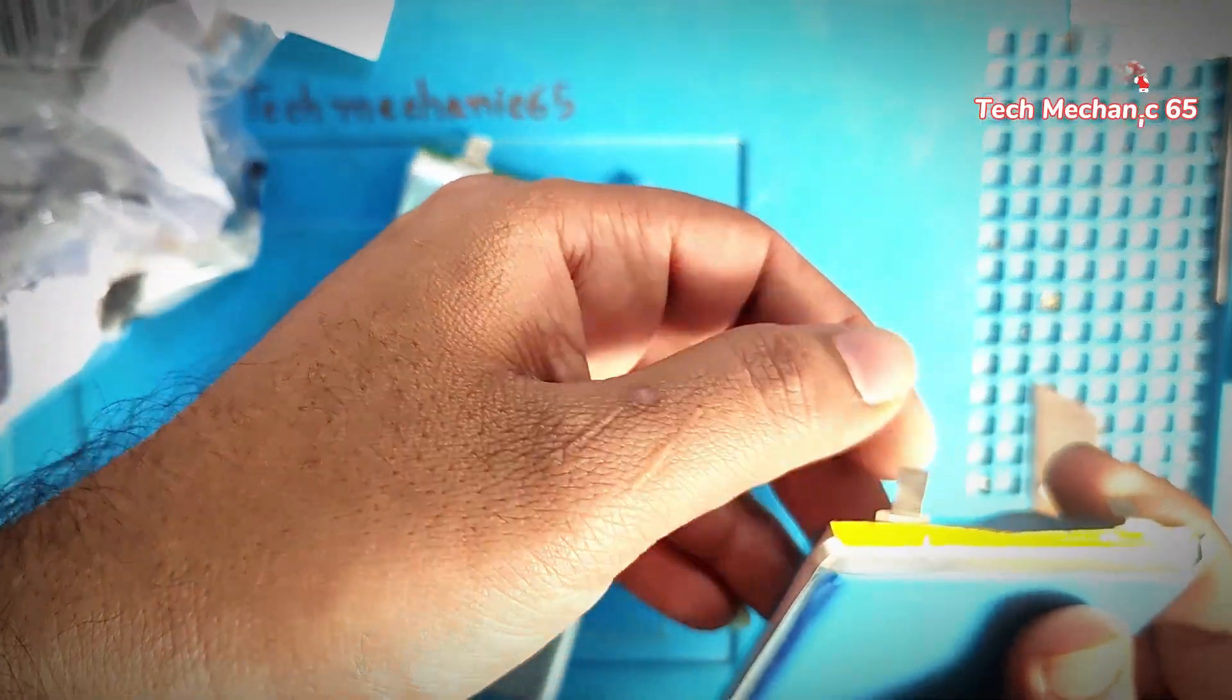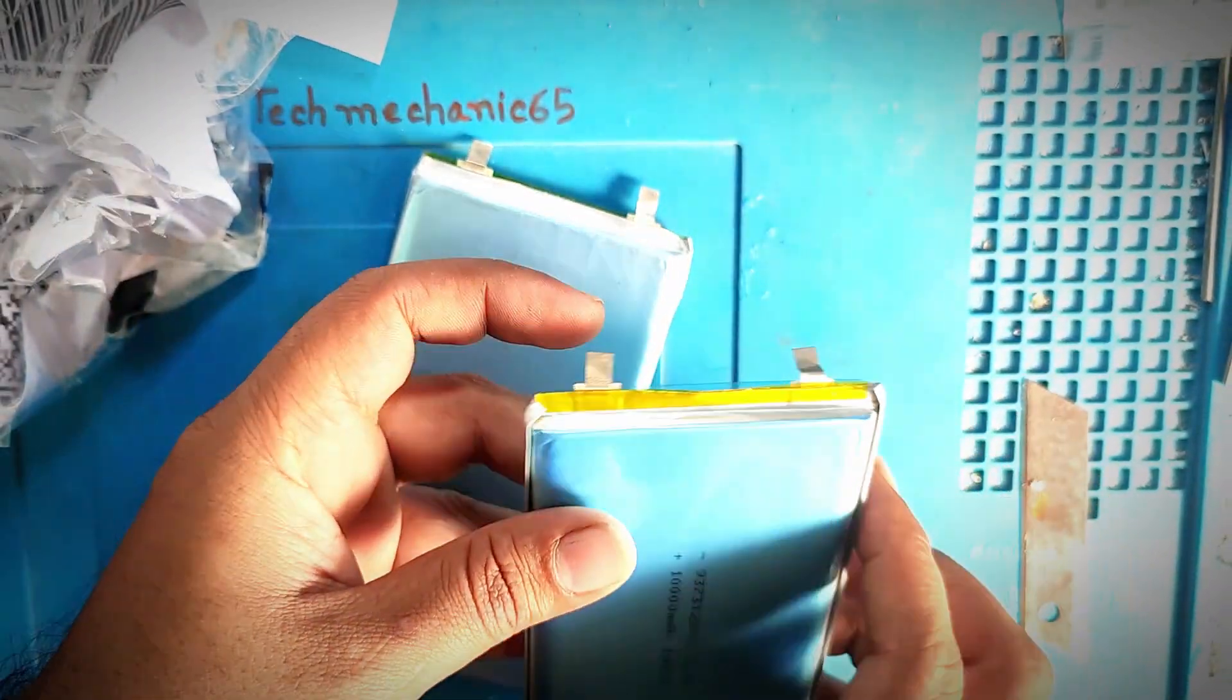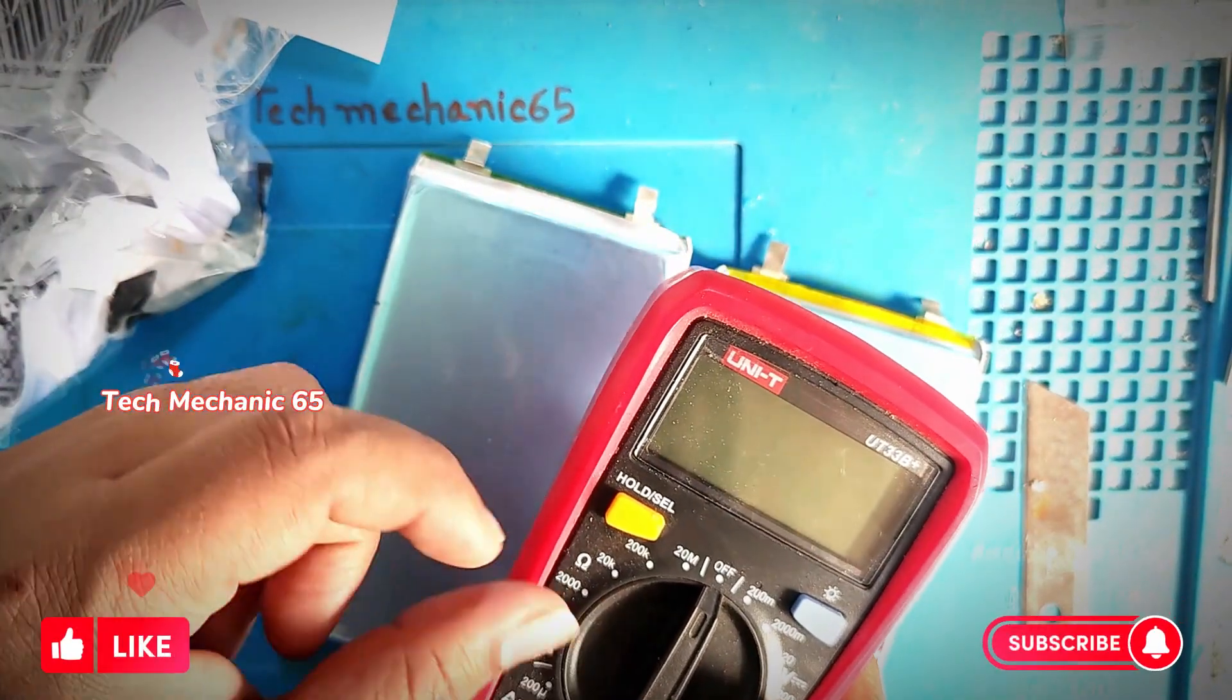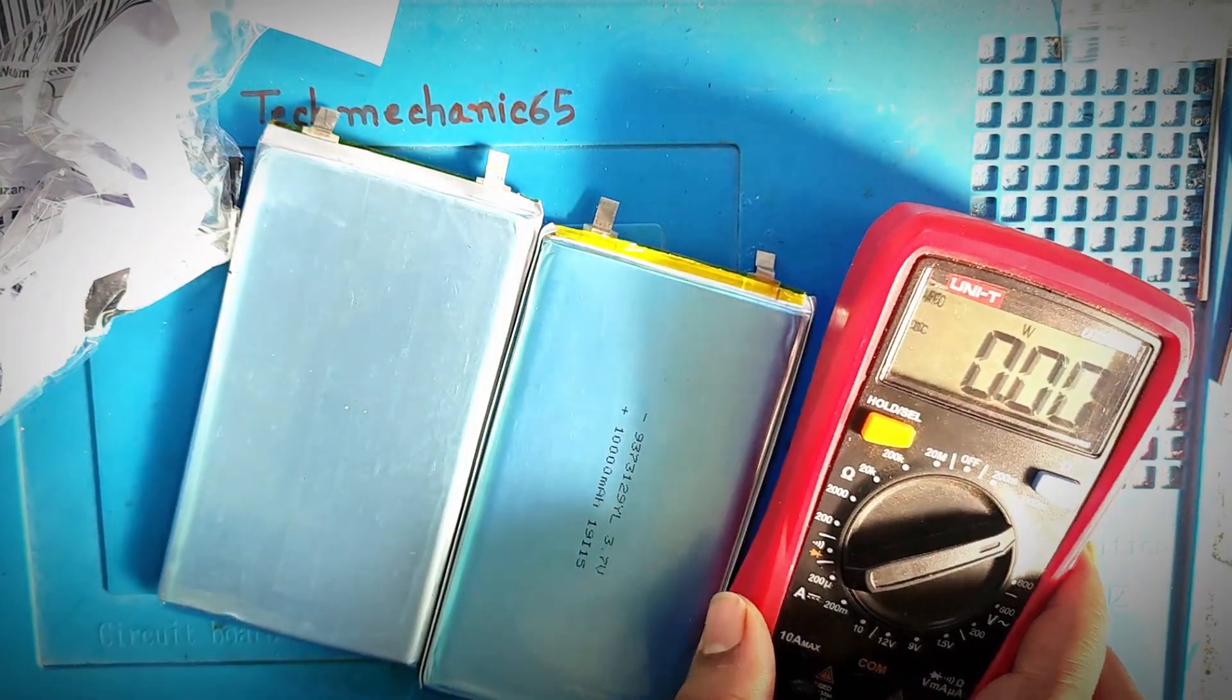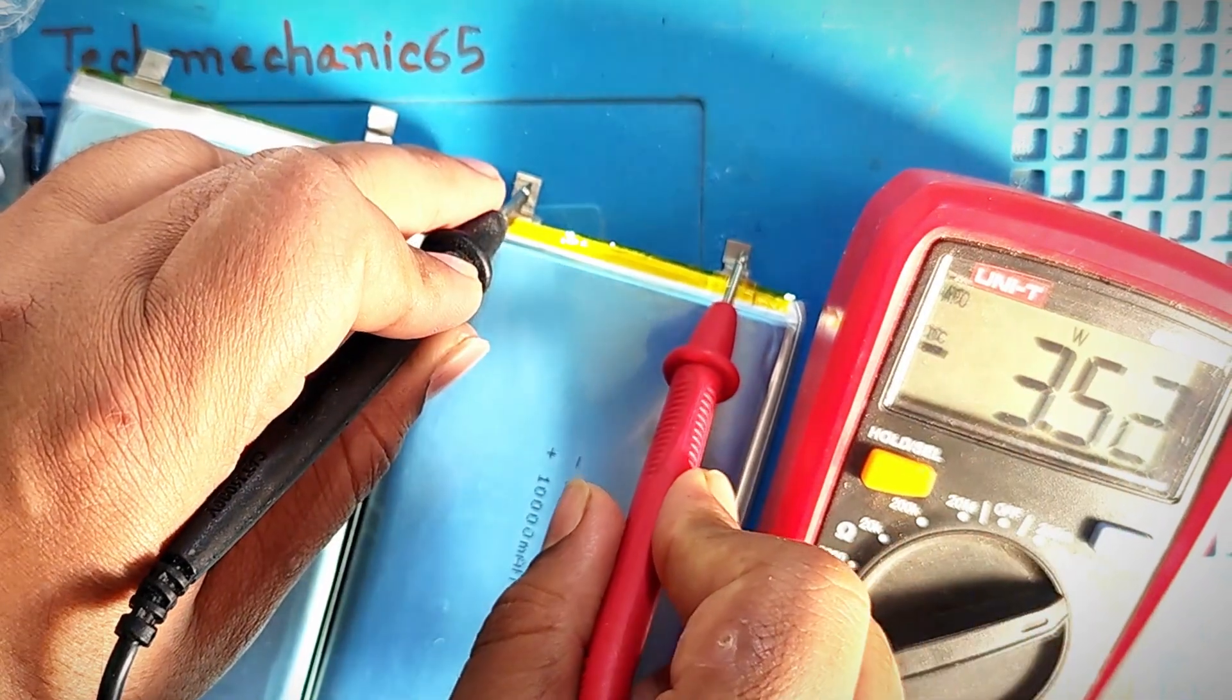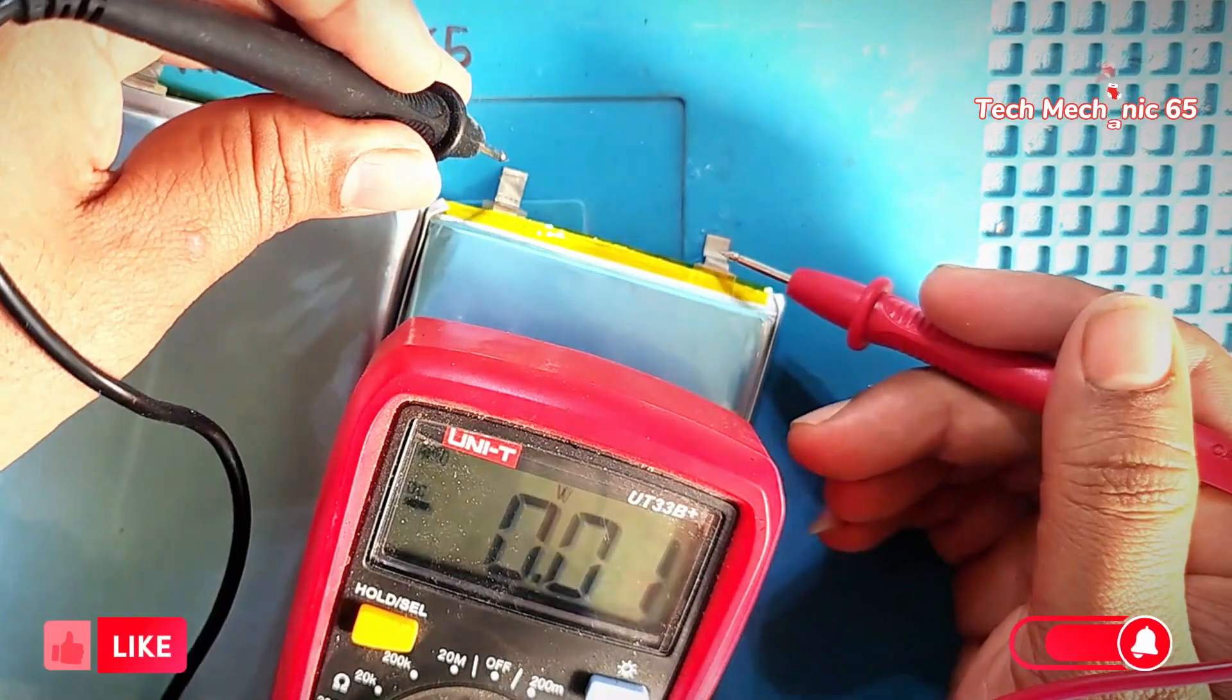Each battery has two ports, one is positive and the other is negative. Here the power of each battery is 10,000 mAh. I will check with digital multimeter how much voltage is there. You can see how much voltage there is. If you want to buy online I will give the link in the description.